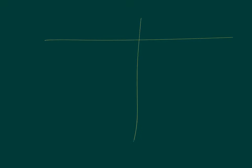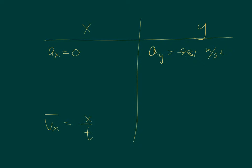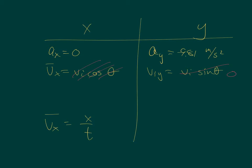The test format is the same: multiple choice, short answer, and mathematical. For math, you need to know your formulas — you should have them nearly memorized. V-bar-x equals x over T should be automatic. For every projectile motion problem on the test, you can start by writing the X and Y direction equations with vi cosine theta and vi sine theta. For horizontally fired projectiles, the overall velocity goes into the x equation and vi-y becomes zero.